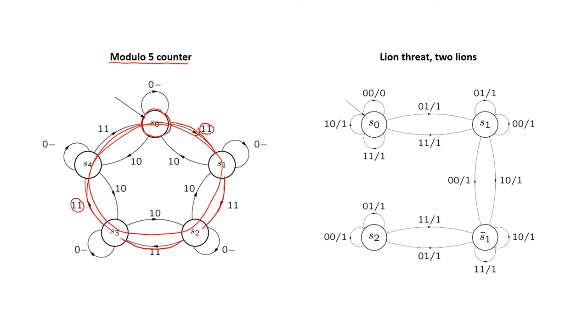In the case with the lion thread where we had two lions, we did not have the same problem. When we are in S0 and we get 01 at the input, when we get the clock signal we will move to state S1, but then we will just stay in S1 as long as we have 01 as the input.